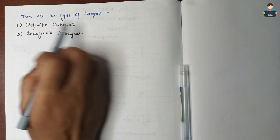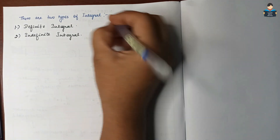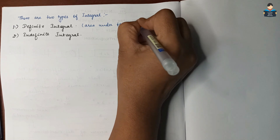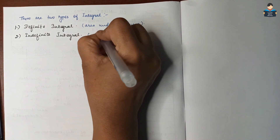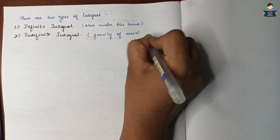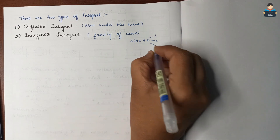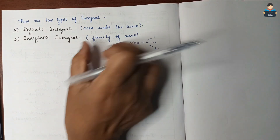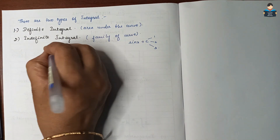There are two types of integrals: definite integral and indefinite integral. The definite integral gives the area under the curve. The indefinite integral represents the family of curves. That's why we write sin x + C, where C can be 1, 2, 3, and so on.